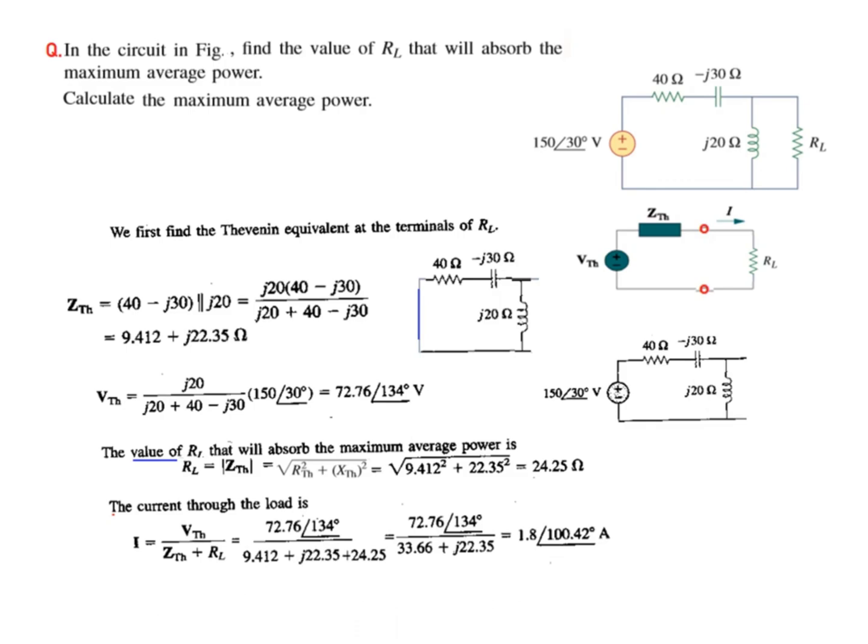The formula for current is V_Thevenin over Z_Thevenin plus R_L. We have all the values, so putting them in, we find current to be 1.8 angle 100.42 amperes. By calculating one-half I squared R_L, we find the maximum average power to be 39.29 watts.